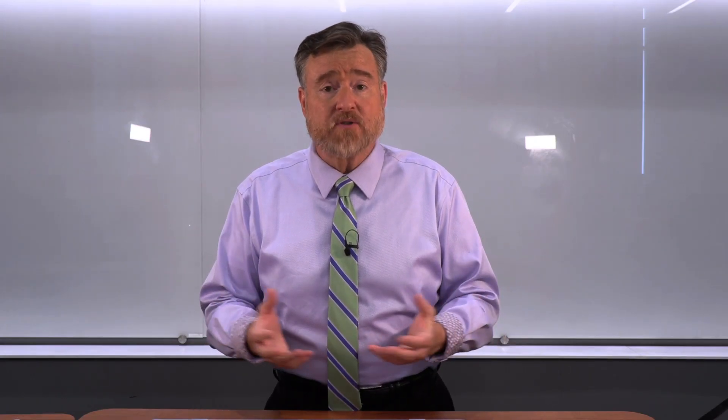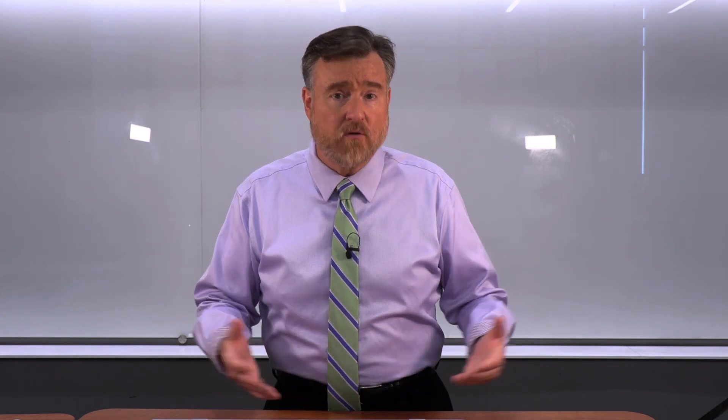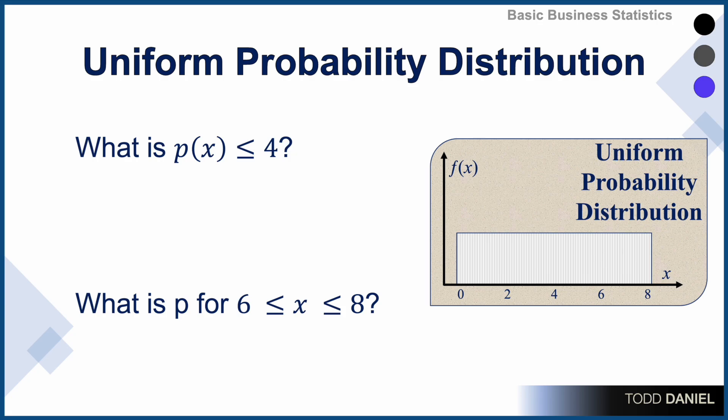Let's use this same example to answer a few questions about uniform probability. Starting with this: What is the probability of an x value, a wait time, less than or equal to four? We can see that the values range from zero to eight, and four is half of that length. Therefore, the probability of a wait time less than or equal to four is .50, half of the interval.